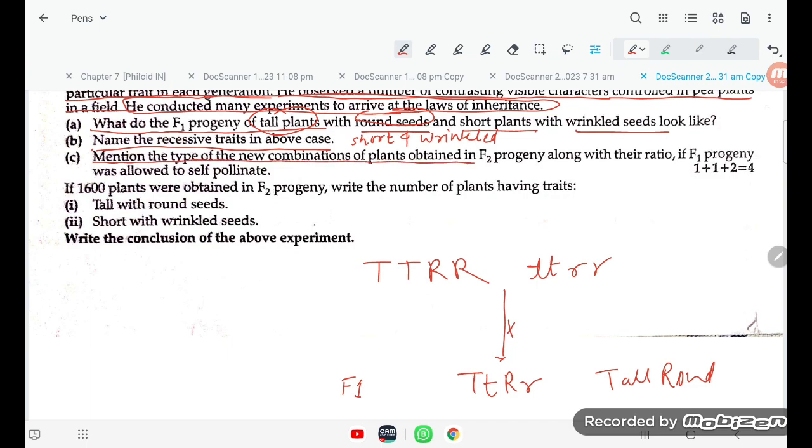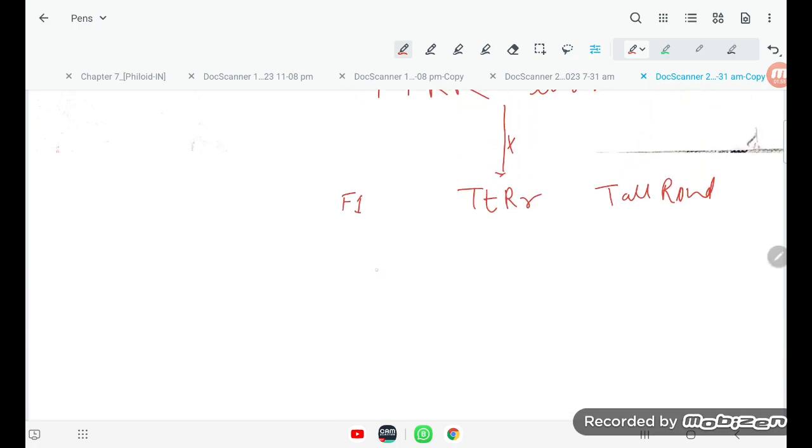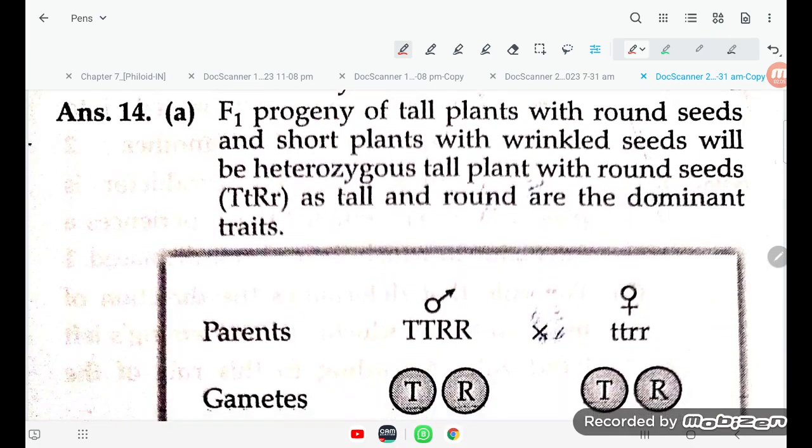Mention the two types of new combinations of plants obtained in F2 generation along with their ratio if F1 progeny was allowed to self pollinate. Two new types will be obtained because the ratio is 9:3:3:1. These are the new generation types.